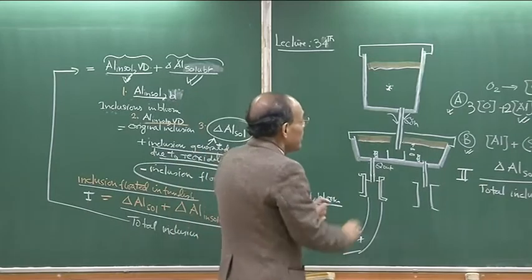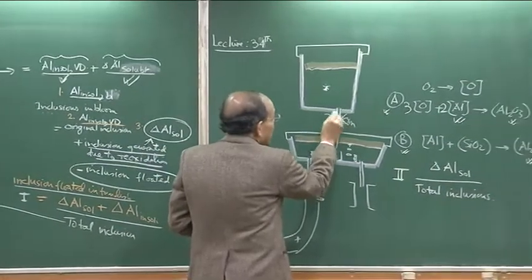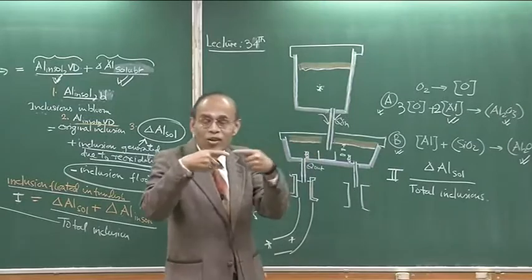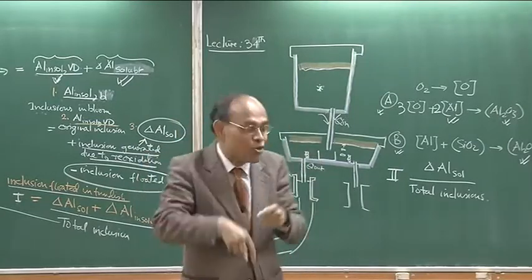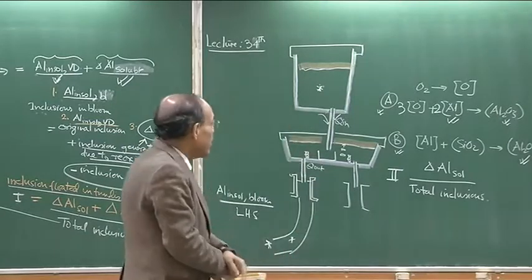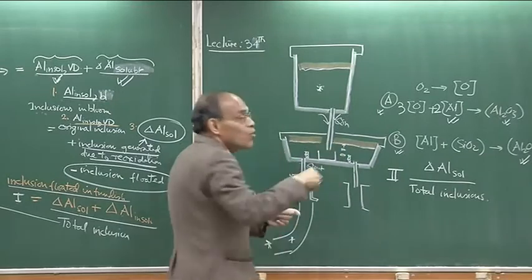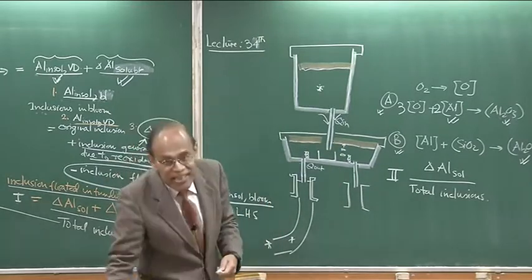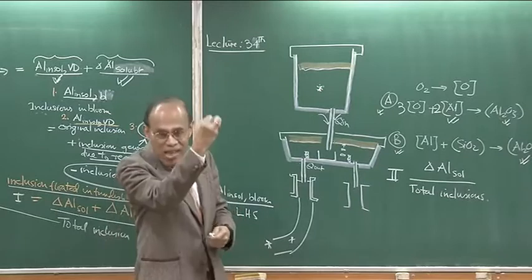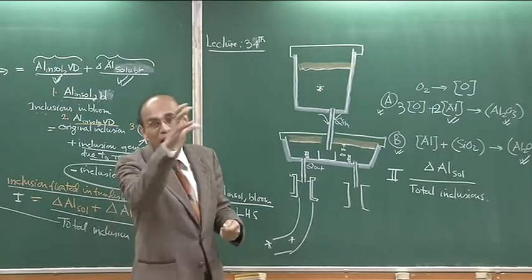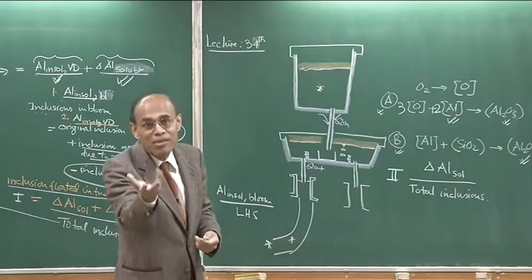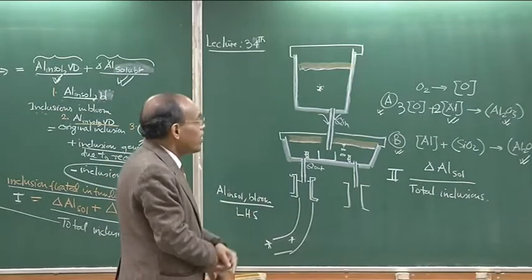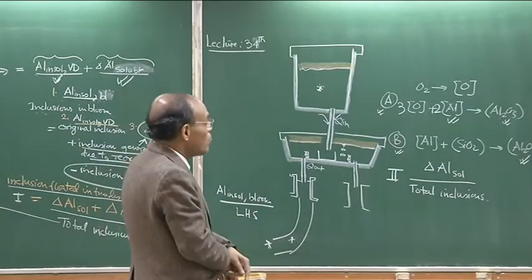To minimize air ingression at the shroud collector nozzle, argon flushing is typically used. The argon flushing provides a shielding such that even if air gets entrained into the shroud, it is mixed with approximately 80% argon and 20% air, minimizing the extent of air absorption and air ingression.